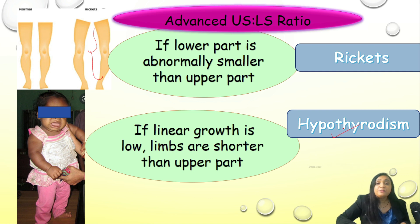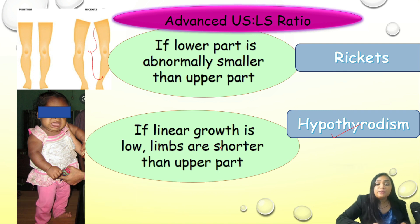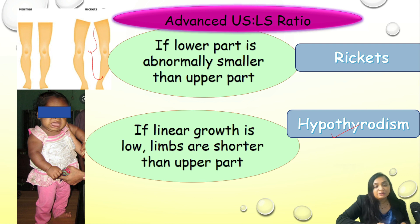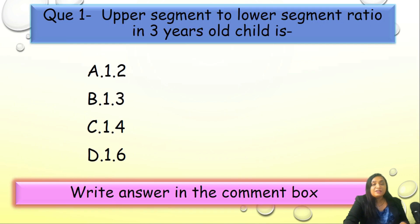Third, the endocrinal condition hypothyroidism — thyroid hormone is very important for skeletal maturation, as discussed in the hormonal influence on fetal growth lecture. Here, skeletal maturation and linear growth are disturbed, leading to shorter limb length, which also results in an elevated upper to lower segment ratio.